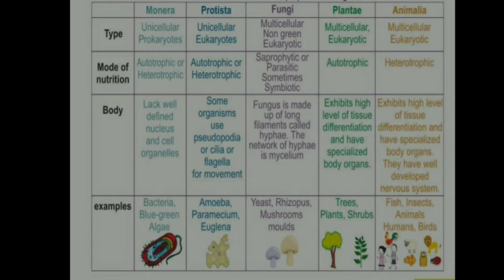Next, Protista consists of unicellular eukaryotes. Mode of nutrition is autotrophic or heterotrophic. Some organisms use pseudopodia, cilia, or flagella for movement. Examples include Amoeba and Paramecium.